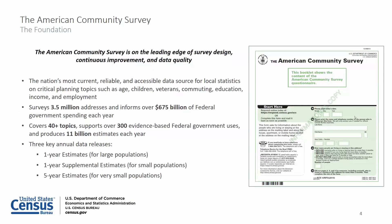The ACS is on the leading edge of survey design, continuous improvement and data quality. It is the nation's most current, reliable and accessible data source for local statistics on critical planning topics. The survey samples approximately 3.5 million addresses each year. These data are collected continuously throughout the year to produce annual social, economic, housing and demographic estimates. The data collected through ACS is used to distribute more than 675 billion dollars of federal government spending each year. Our estimates cover more than 40 topics, support more than 300 known federal uses and countless non-federal uses.